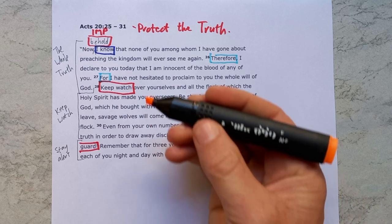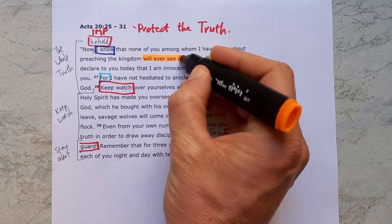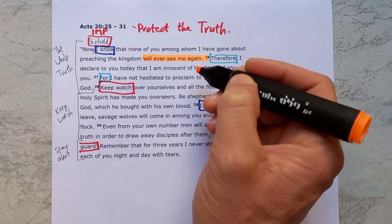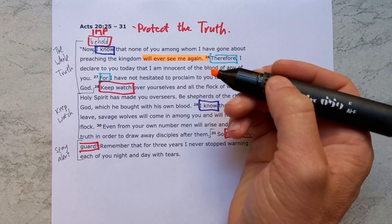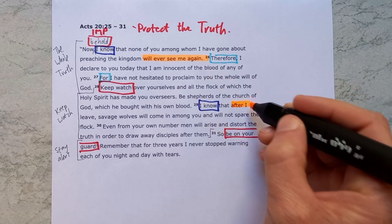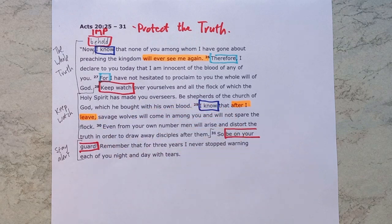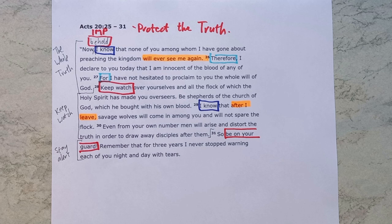Paul is convinced that he will never see them again, so these are his final words to them. He says, "after I leave" — he's convinced he's on his way to Jerusalem, taking a financial gift from the Greek churches to the church in Jerusalem. And as we saw in the previous section, he says that trouble and prison await him. He's being warned and he knows that's what's coming. So these are in many ways his final words spoken to these Ephesian elders, and final words are important. He's reminding them of key things.